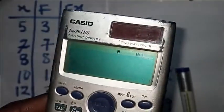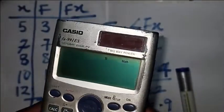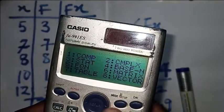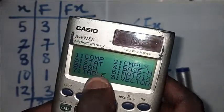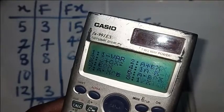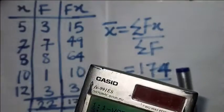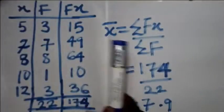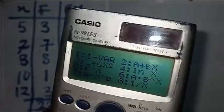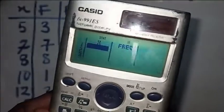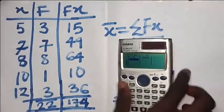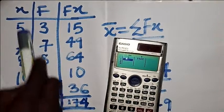Next, click on Mode. You can see 'Statistics' is number 3, so click on 3. You can see a table for 1-variable — click on 1. This brings up the table with an X column. You can see that the calculator now has X and F columns ready for input.